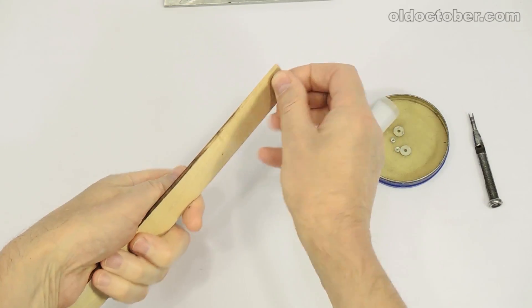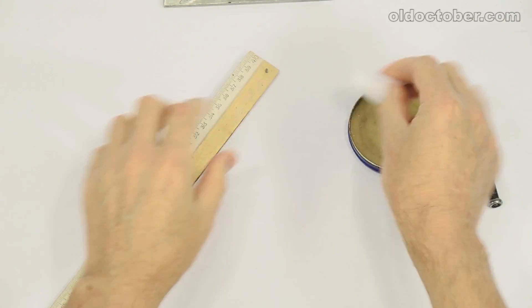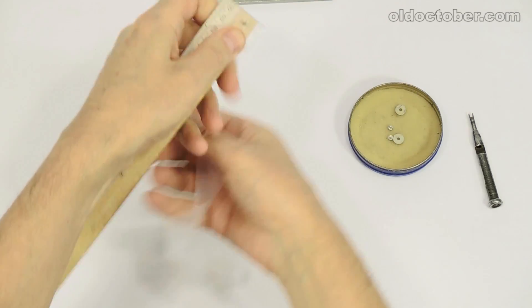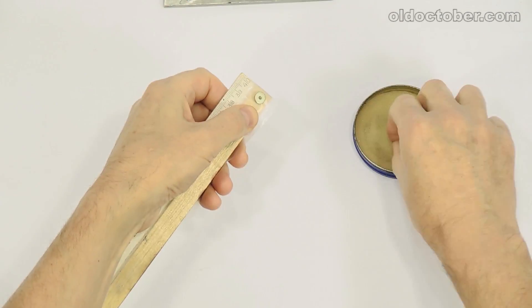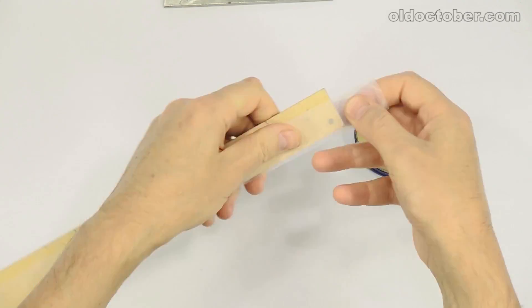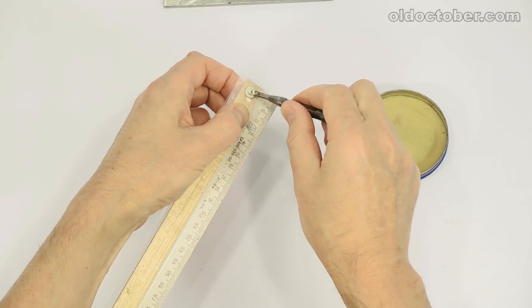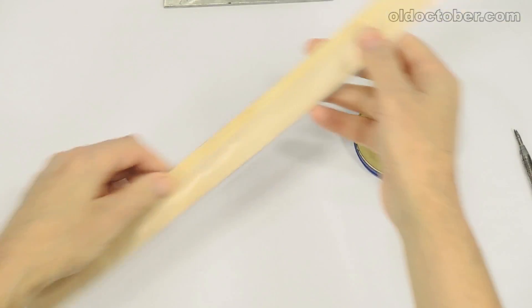A small piece of Teflon tape can be purchased at a hardware store or ordered online. To make it convenient to use Teflon tape, secure the narrow strip of Teflon tape to the ruler with two screws.